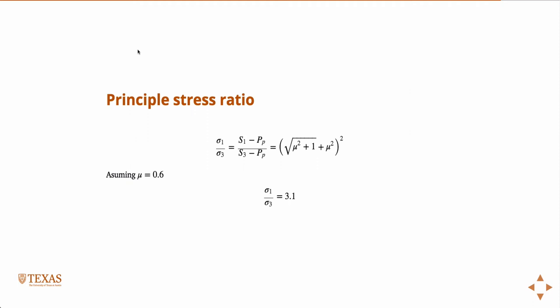So, then, using our Mohr-Failure criteria now, we can come up with this equation, and if you plug in a value of mu equal to 0.6, you can see that the maximum ratio of the stresses in the Earth, according to this idea, remember, according to this idea that any large enough section of the Earth is going to have enough faults in it that some of them are going to be constantly activated and slipping.